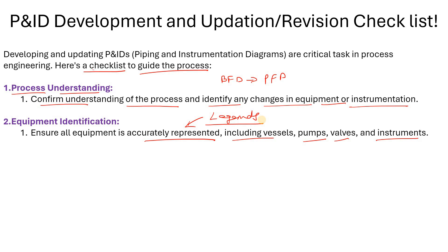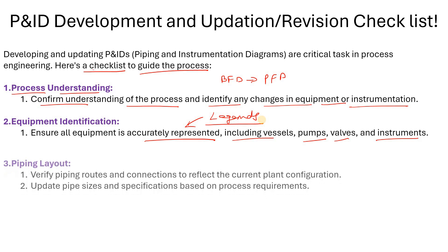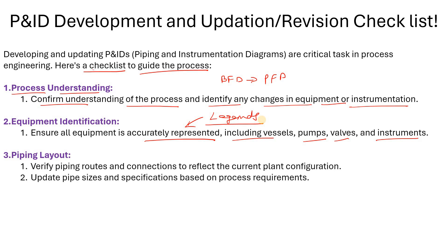Please check those legend sheets. Check the symbols for valves, pumps, instruments, and vessels and update accordingly. Then your piping layout — please verify the piping routes and connections to reflect the current plant configuration. If there is any change, update the pipe sizes and specifications based on the process requirements.